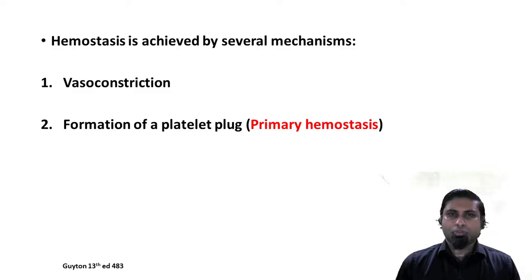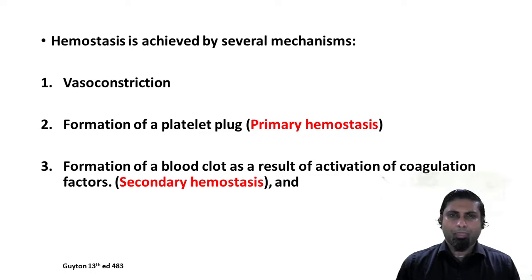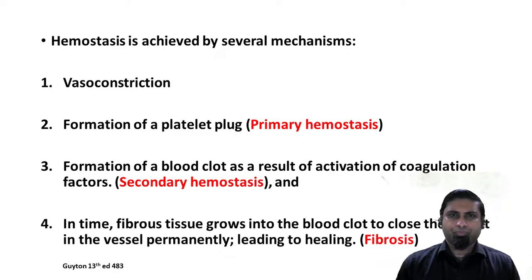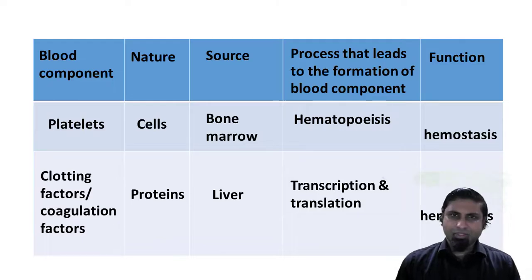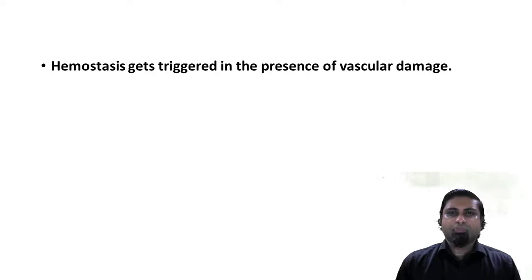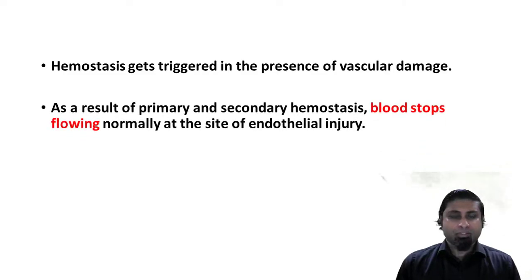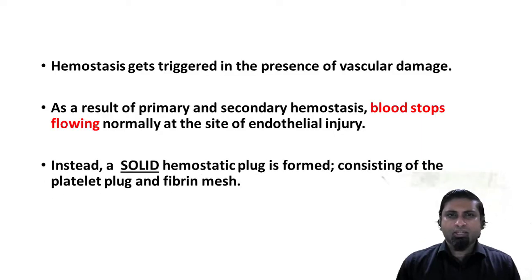Coagulation factors or clotting factors also get activated and they form a fibrin mesh — this is referred to as secondary hemostasis. Finally, the injury in the blood vessel heals by fibrosis. So platelets are involved in primary hemostasis while coagulation factors are involved in secondary hemostasis. Hemostasis gets triggered in the presence of vascular or endothelial injury, and as a result, blood stops flowing normally at the site, and a solid hemostatic plug is formed consisting of a platelet plug and fibrin mesh.